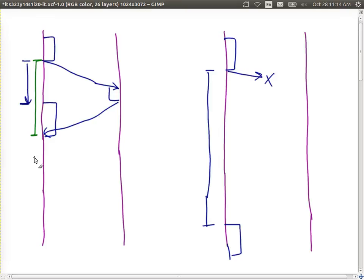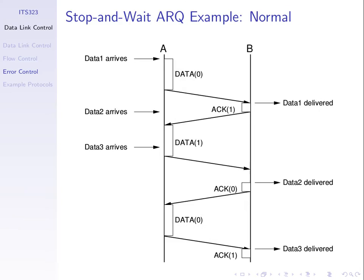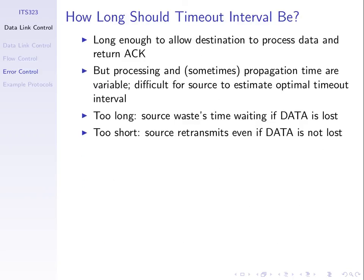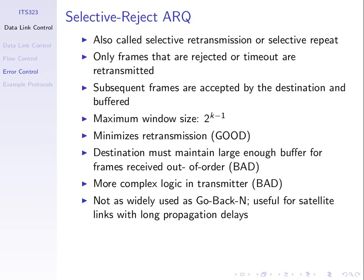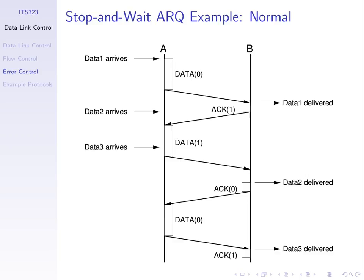Any questions about the timeout interval? In some systems and protocols it's defined in advance — the value is given. In others, the software tries to estimate the best value over time: it measures how long it takes the previous one and then adapts the timeout interval. We will not go into those protocols. How long should the timeout interval be? What's another thing we skipped over? Related to both sliding window, stop and wait flow control and the ARQ protocols: how big should our data frame be? Another design issue.